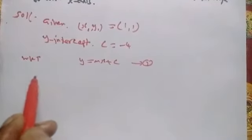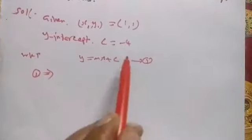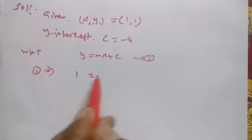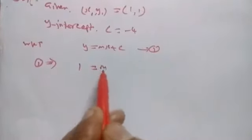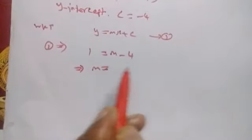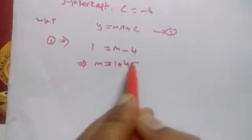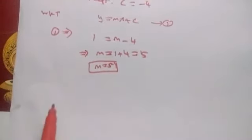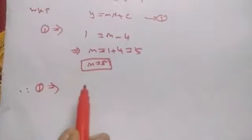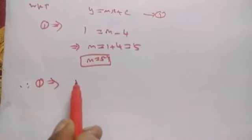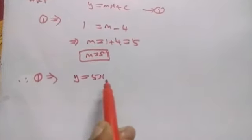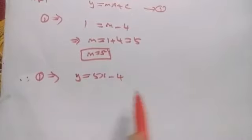So substituting the point (1,1): x1, y1, and c values. 1 equal to m into 1, which is m, plus c is -4. Then m equal to 1 plus 4 equal to 5. Therefore, the required equation of the straight line is y equal to 5x minus 4.